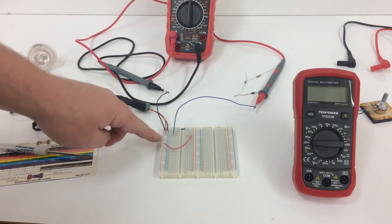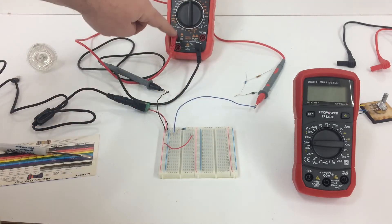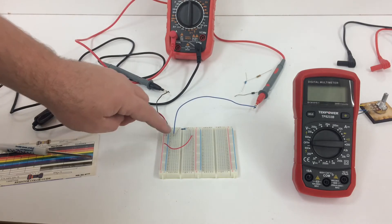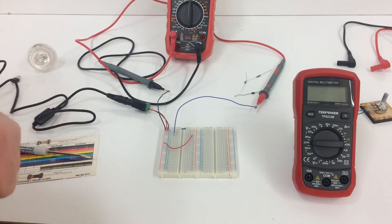So as we see, if we follow the red, we go through the resistor, through the multimeter, out of the multimeter, and to ground. So we've made a series connection to measure current.